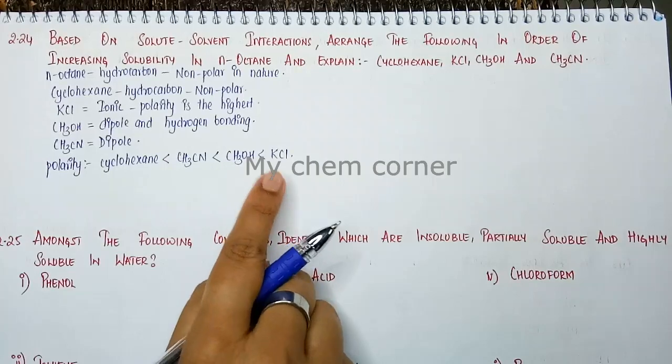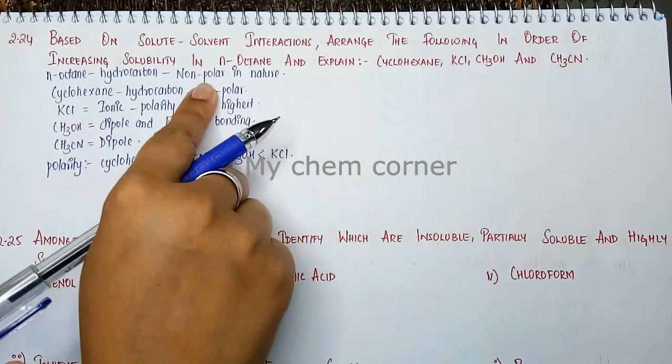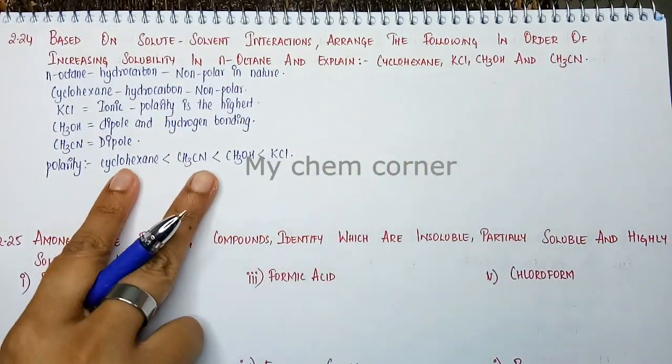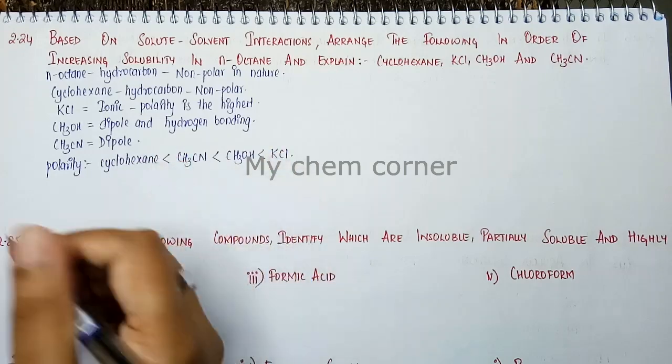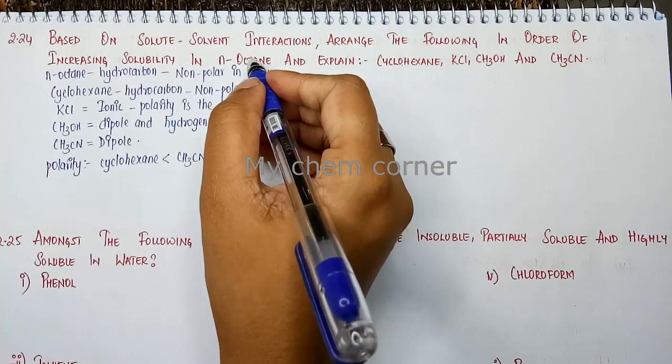Now the question asks about solubility. Based on polarity, we know that a non-polar solute will be soluble in a non-polar solvent. So the solubility will be the opposite of polarity order. The compound that is non-polar will dissolve most easily in the non-polar solvent.